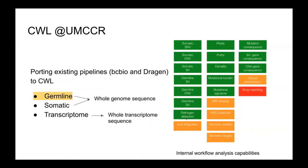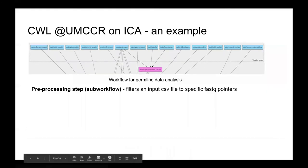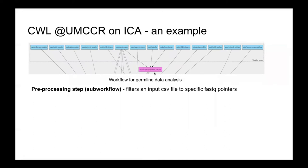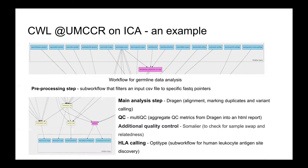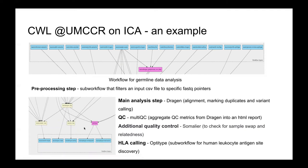Keeping these ICA features in mind, I will quickly go through one of our comprehensive workflows for germline data analysis that we have translated to CWL and ported over to ICA. This is the overall representation of the workflow. You can see the inputs, the steps, and the major outputs generated. Zooming in, the sub-workflow highlighted in purple uses a couple of inputs and filters an input CSV file to specific pointers. Other steps include a DRAGEN step that does the main analysis, a couple of QC stages, and human leukocyte antigen site discovery, which happens via another sub-workflow using OptiType as a tool.